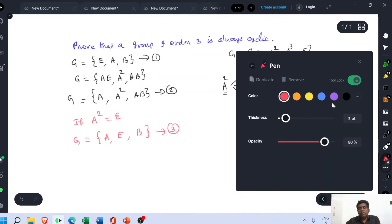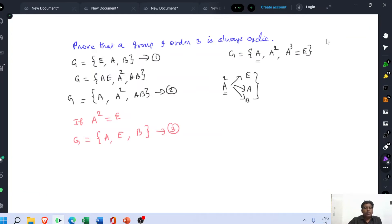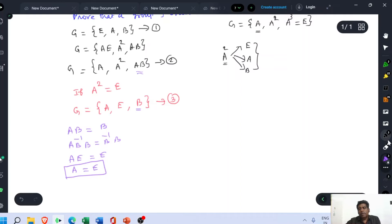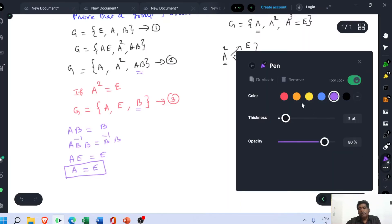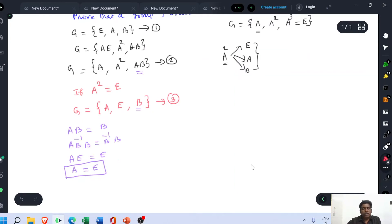Now from these two equations two and three, we may write AB equal to B. Multiply both sides by B inverse. AB inverse B equal to B inverse B. But B inverse B is our identity element. So A into E equal to E. Therefore, A equal to E. We arrive at the condition that the value of the element A is equal to E, which is not acceptable because we expect the value of A cube is equal to E. So this is wrong. If this is wrong, then the assumption A square equal to E is wrong. So A square not equal to E.